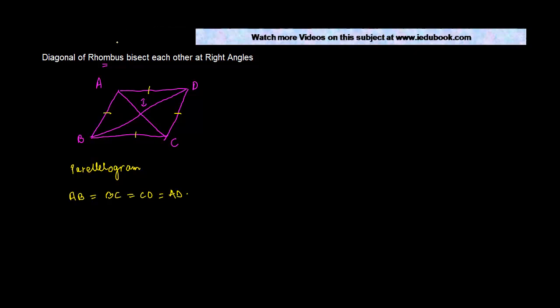In the previous lecture, what we saw was that in a parallelogram, the diagonals bisect each other. If you want to see the proof of this, you can go to the previous video also.